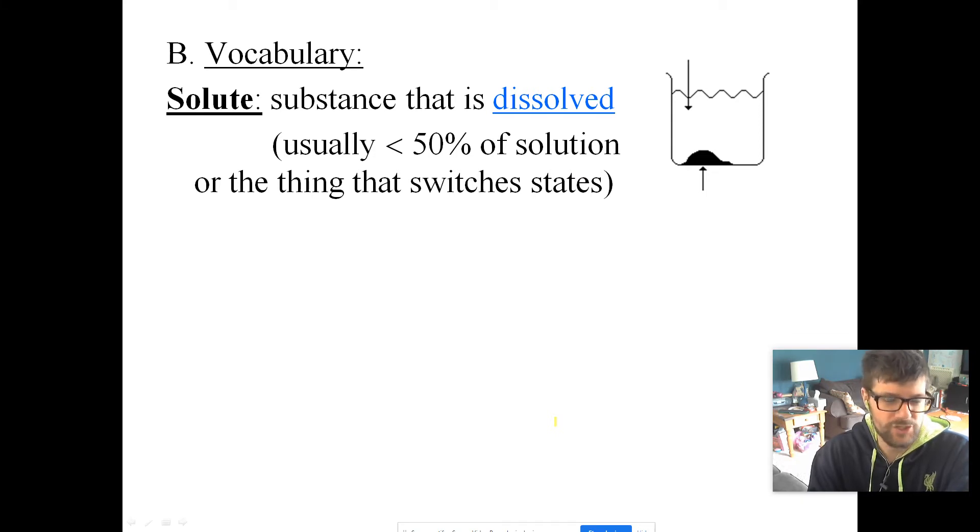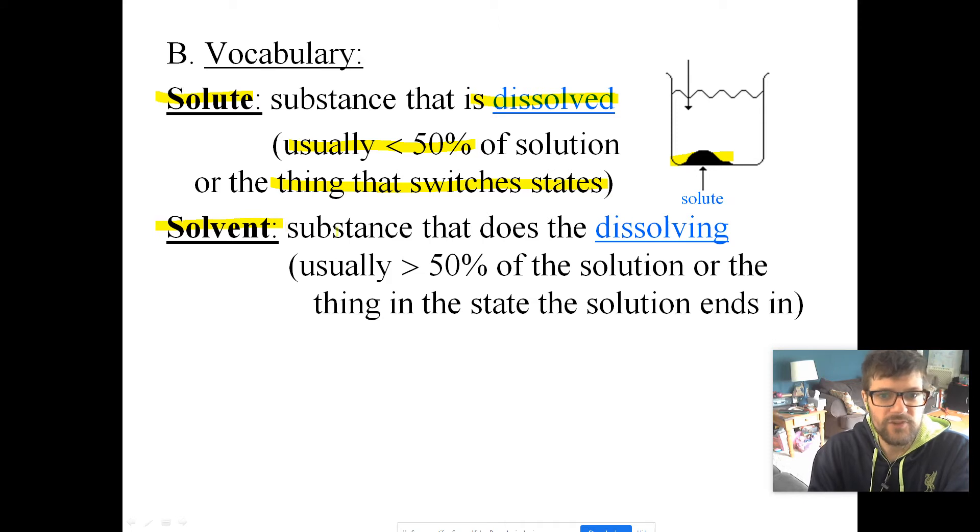There's a lot of vocab in this chapter. First of all, the solute, which is one you've probably heard before, is typically the substance that gets dissolved. There are not 100% steadfast rules here, but usually this is going to be less than 50% of the solution. Another way to think about it, it's the thing that switches states. In a lot of common solutions, we have something that was a solid dissolving into a liquid. Well, the thing that was a solid is switching states, so that's the solute. The other thing is the solvent, and the solvent is the thing that does the dissolving, usually greater than 50% of the overall solution. It's the thing that when you have your solution, it started in the same state that your solution is in.